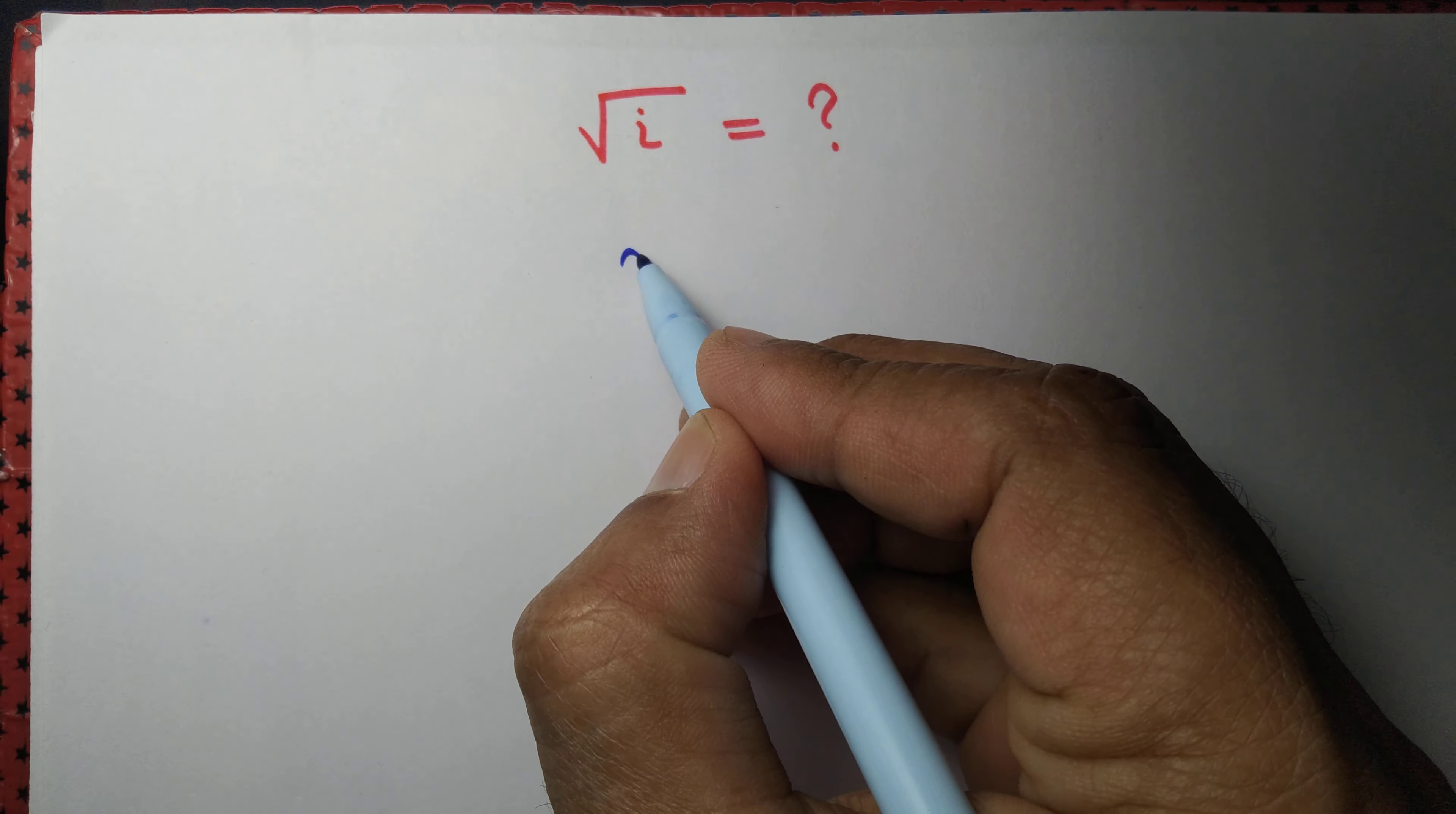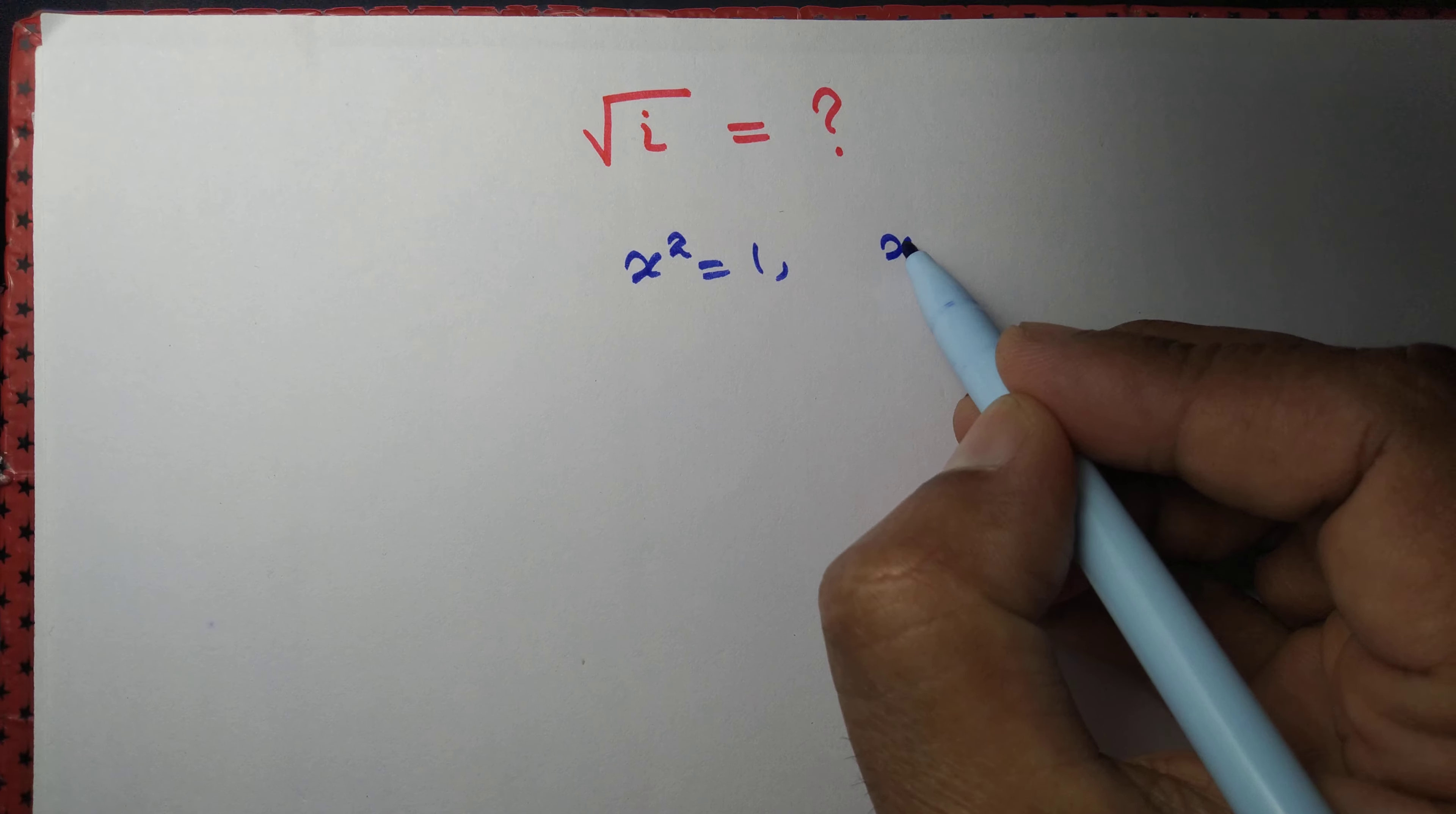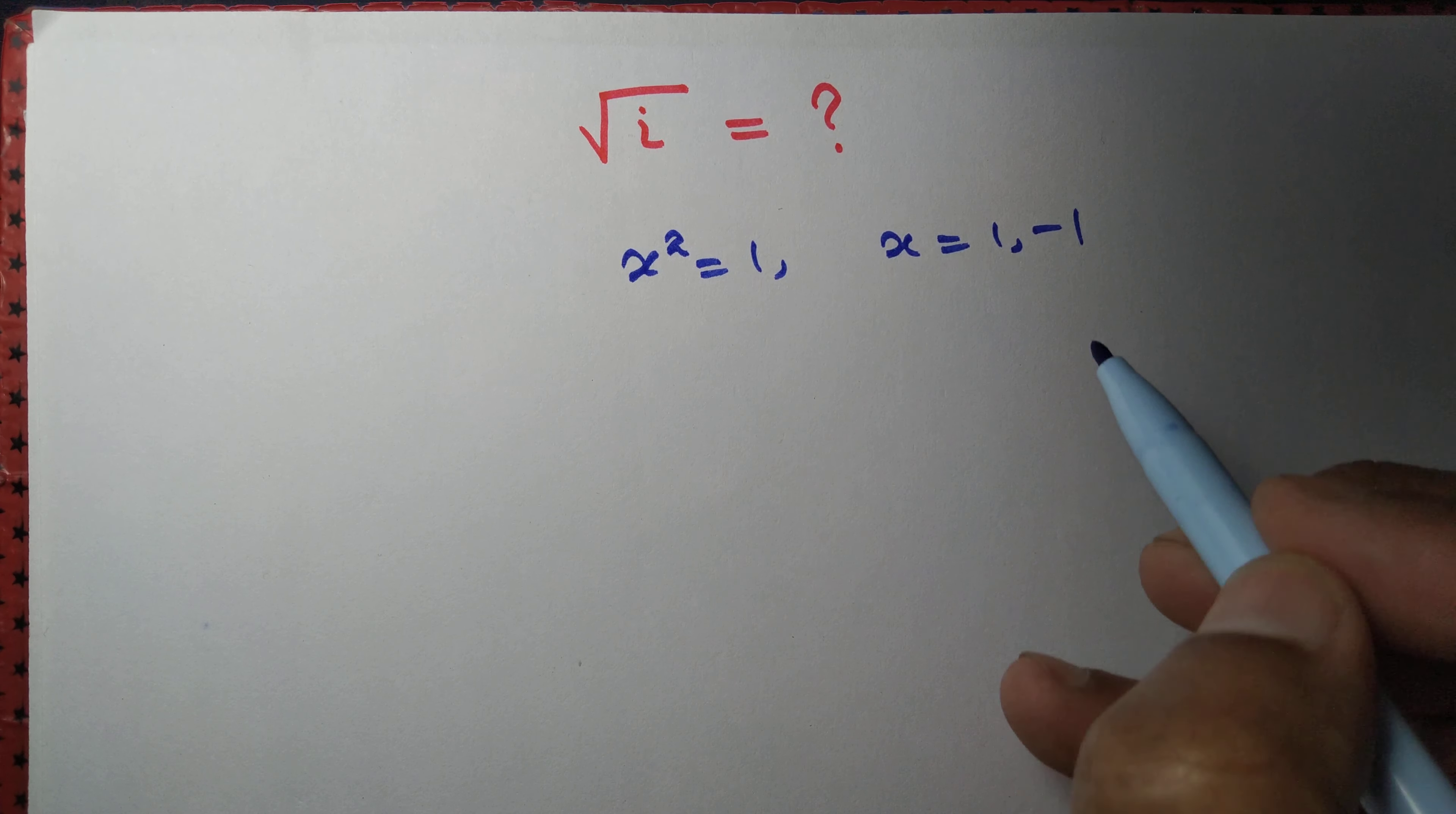First we observe that if we solve the equation x squared equals 1, then you get x equals 1, minus 1.